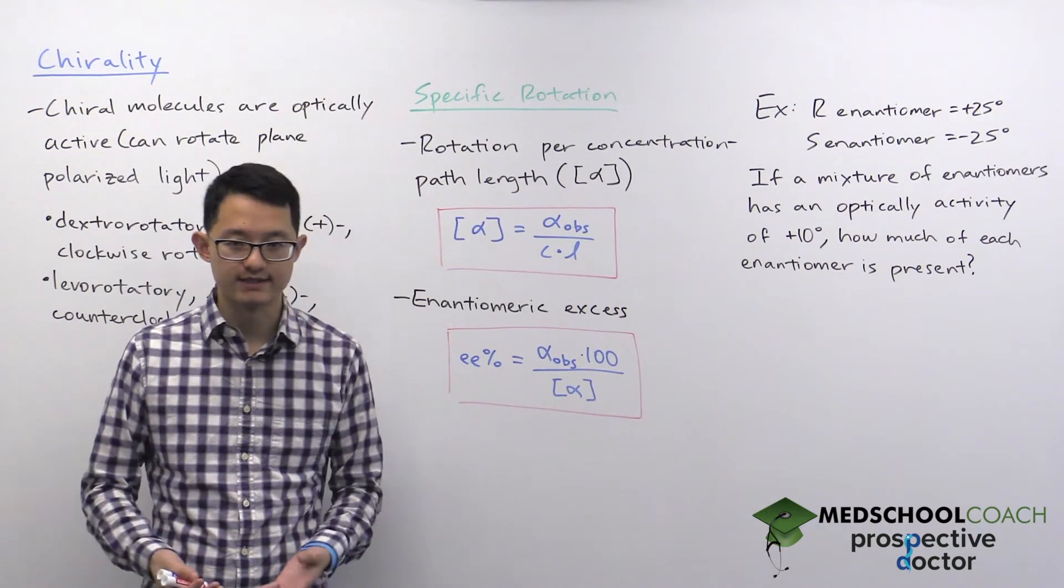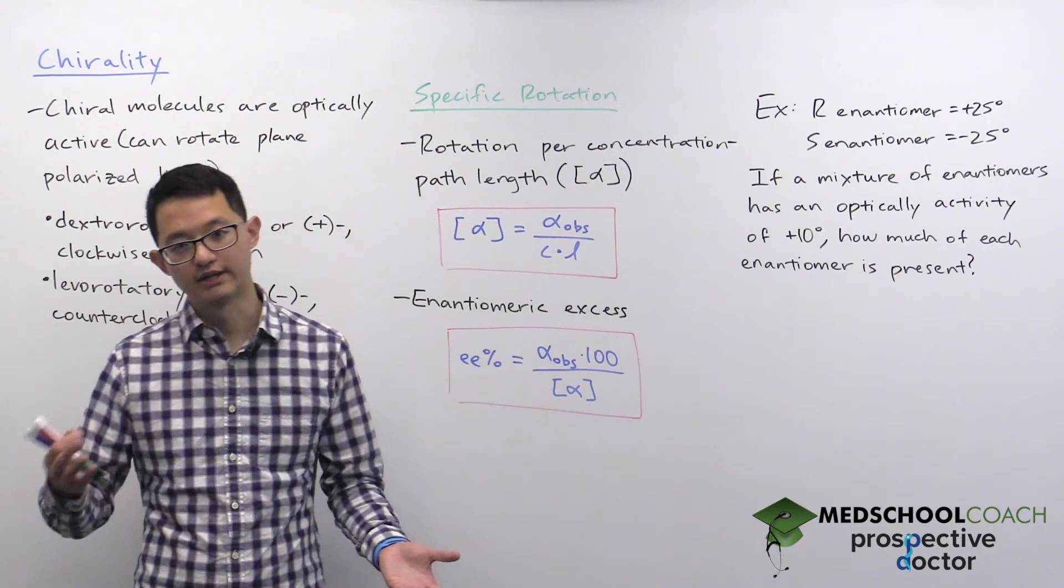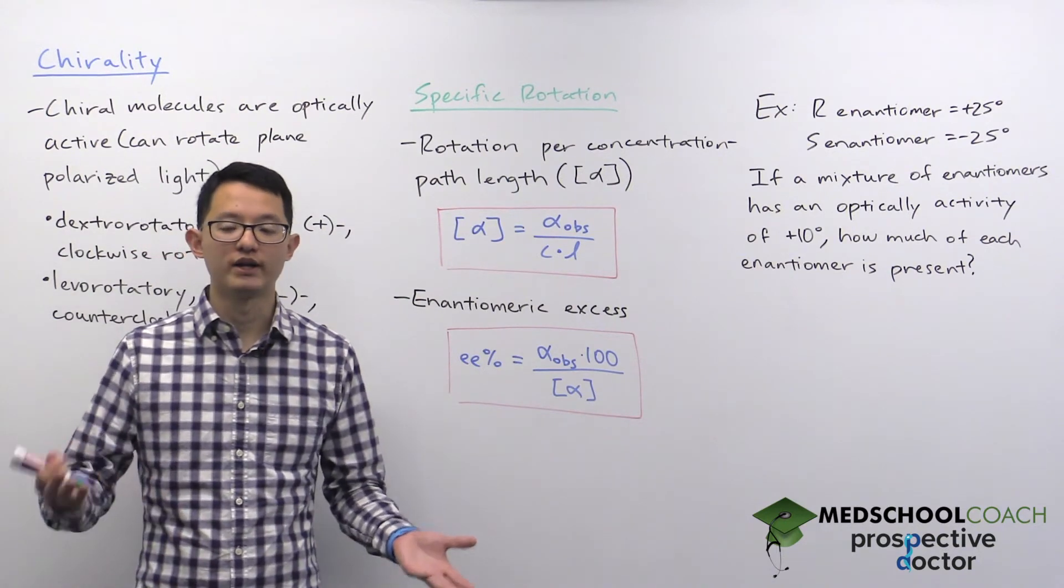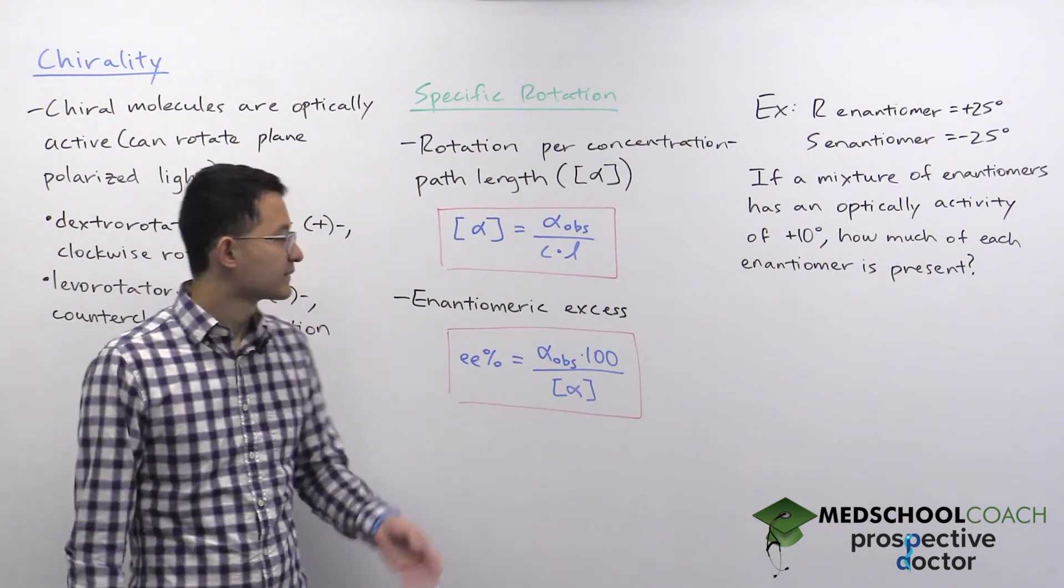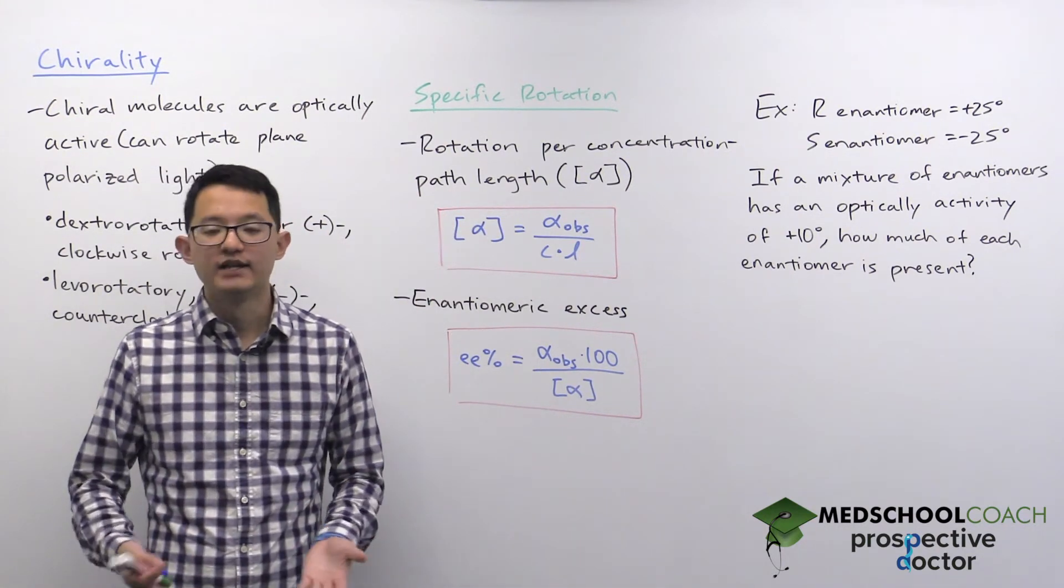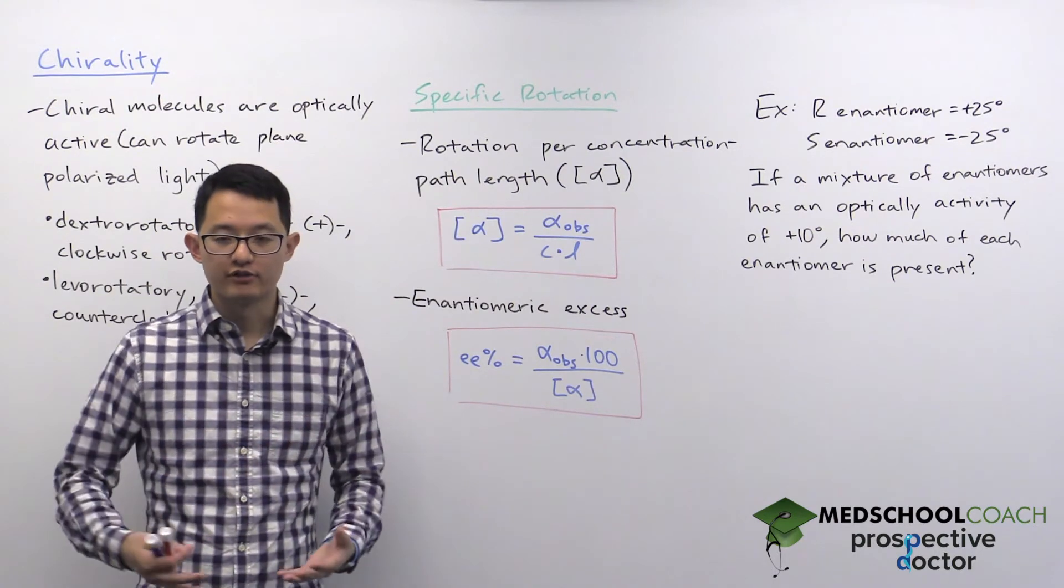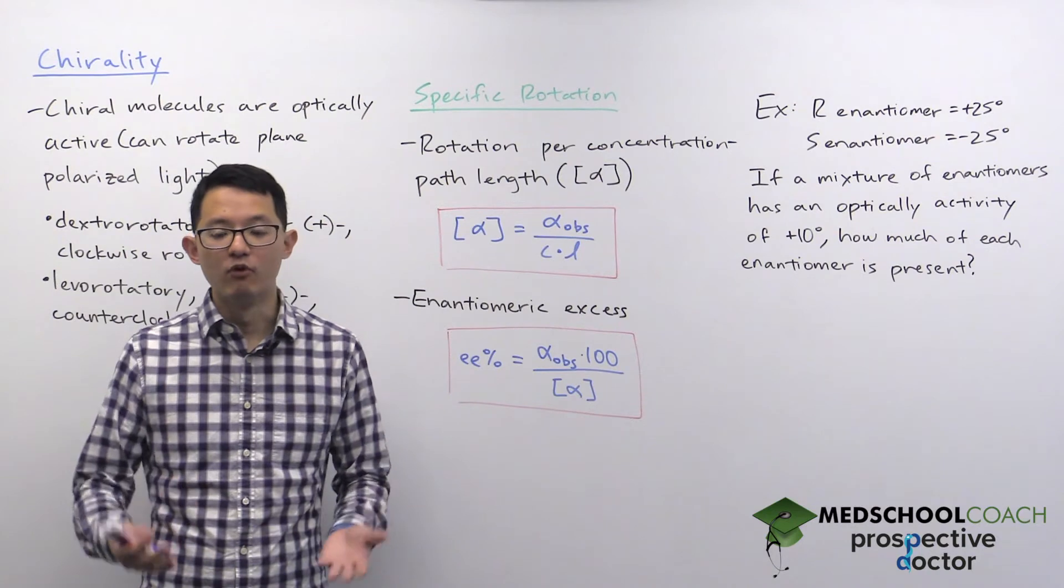You can imagine, for instance, if you have two mixtures of the same compound, one at a lower concentration and one at a higher concentration, the one at the higher concentration would rotate more light. Same thing for path length. The greater the path length, the more molecules that your light has to pass through, so you're going to get more rotation.